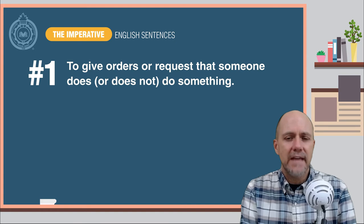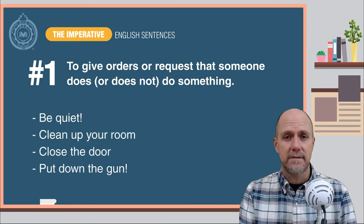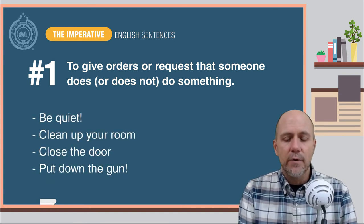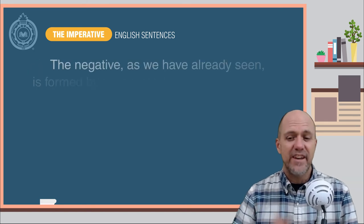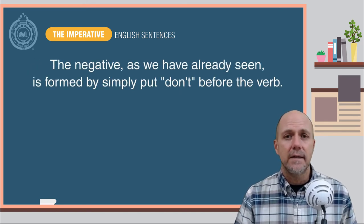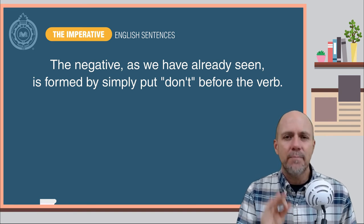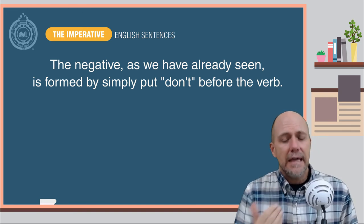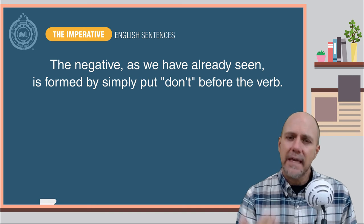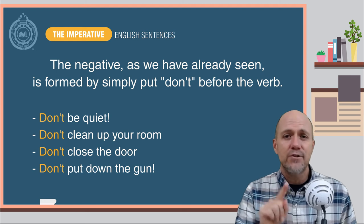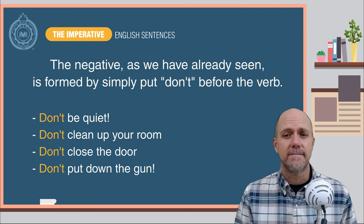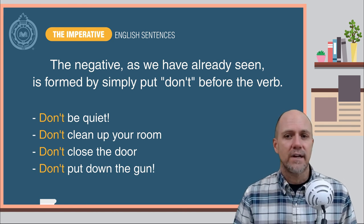Here are some examples: Be quiet. Clean up your room. Close the door. Put down the gun. The negative, as we have already seen, is formed by simply putting the word 'don't' in front of the verb in the simple form. Here are a few examples: Don't be quiet. Don't clean up your room. Don't close the door. Don't put down the gun.